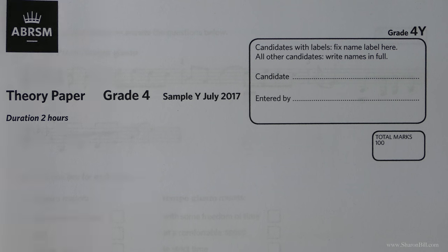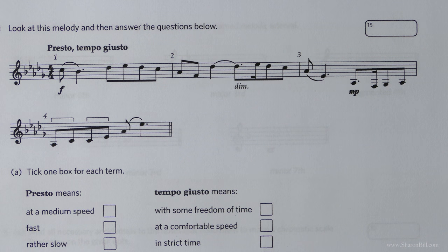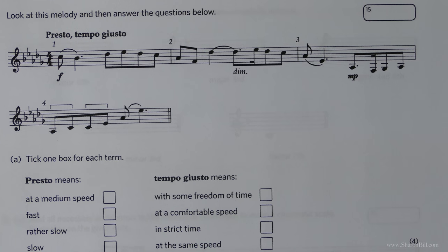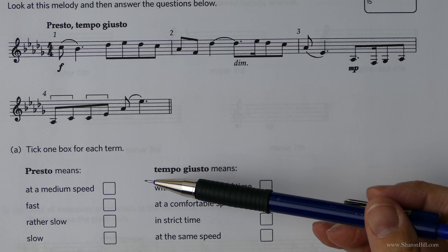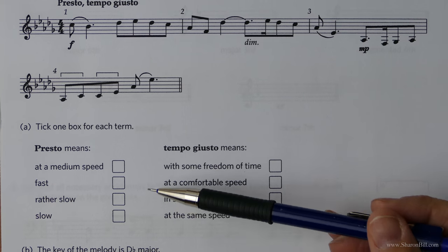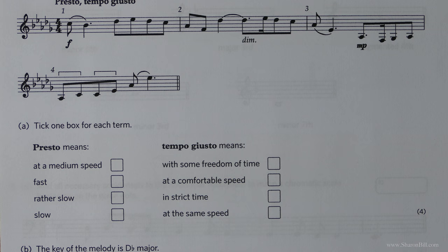So if you turn with me to page 2, just past the front cover, we'll have a look at this first question. Straight away we see the first change to the exam paper: from now on all of the performance directions and musical symbols will be presented in multiple choice format. The other difference is that there is no composition of a rhythm or composition of a rhythm to words — that's no longer on the paper at all.